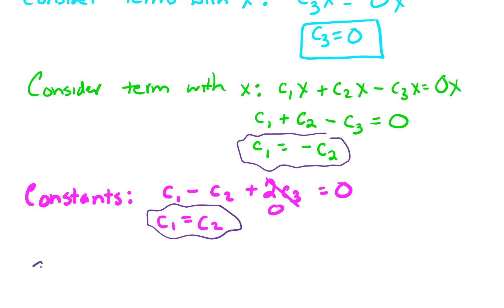Putting these last two pieces together, since C1 equals negative C2, and it must be true that C1 equals C2, this implies that C1 must be zero and C2 must be zero.